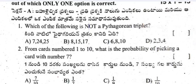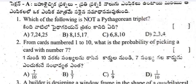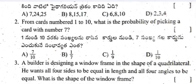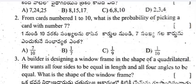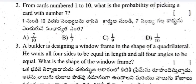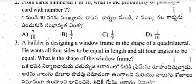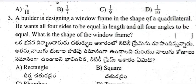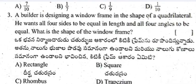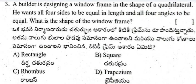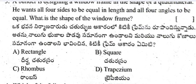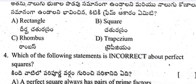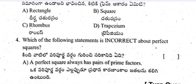Question 1: Which of the following is not a Pythagorean triplet? Question 2: Cards numbered 1 to 10 — what is the probability of picking a card with number 7? Question 3: A builder is designing a window frame in the shape of a quadrilateral with all four sides equal in length and all four angles equal. What is the shape of the window frame?